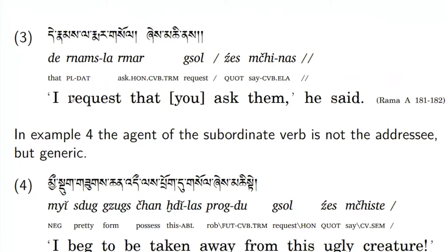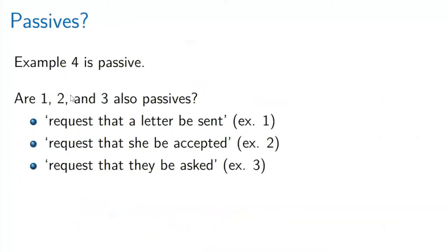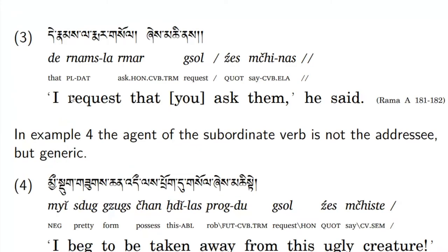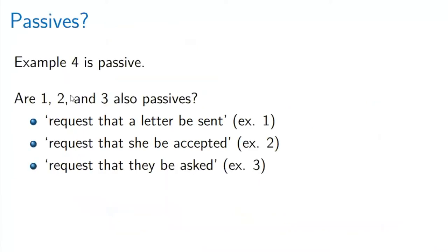In example four, the agent of the subordinate noun is not the addressee but is generic. This is Sita; she says, 'I beg to be taken away from this ugly creature.' I read out the Tibetan — troc du sol — just so you are convinced there's a sol in it; it's the infinitive construction. So I think that's interesting. If we have to read this fourth example as a kind of passive, maybe we can read them all as passive — that's my conjecture.